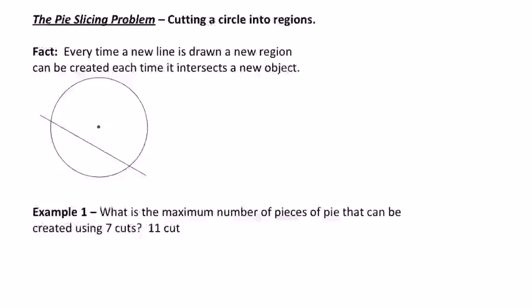Now, the key there is the new object, because one of the objects, a circle, it always intersects twice, but it's only going to create one region when it intersects a circle. So you can see, when I draw one line across a circle, I take one region, I intersect the circle with the line, and I create two regions.